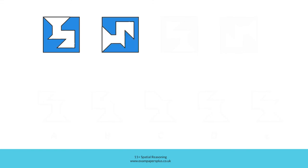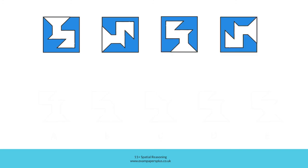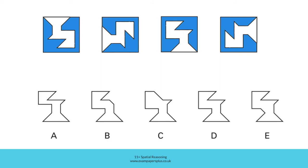So we know then that the shape might be in its original orientation, or it might have rotated 90 degrees anticlockwise, or 180 degrees, or 90 degrees clockwise, or any other number of degrees. The shape can indeed be in any orientation amongst these five answer options.